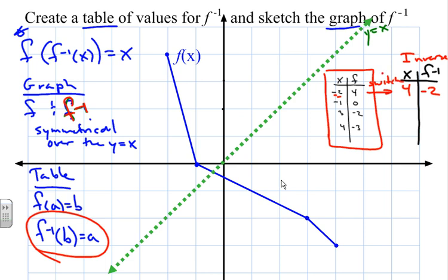Everything is switched. If I plug in a 0 into the inverse, I should get out a negative 1. If I plug in a negative 2, I should get out a 3, because that's what happens when you have inverses. If I plug in a negative 3, I should get out a 4.